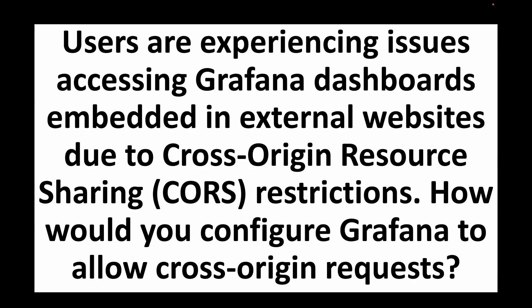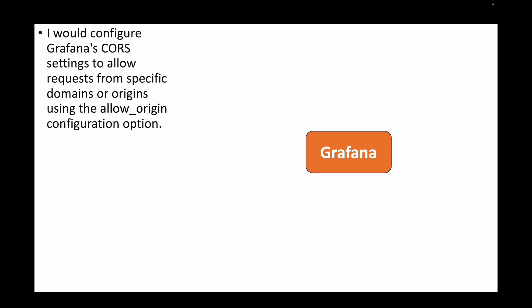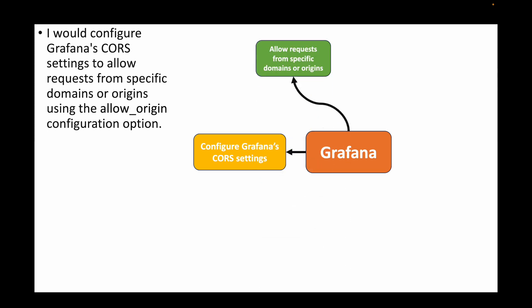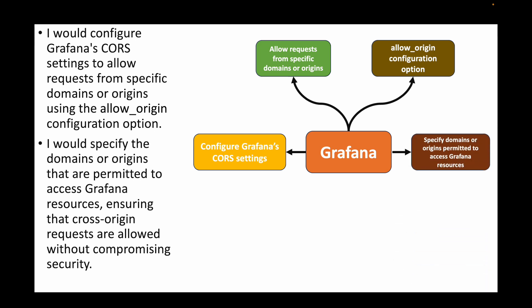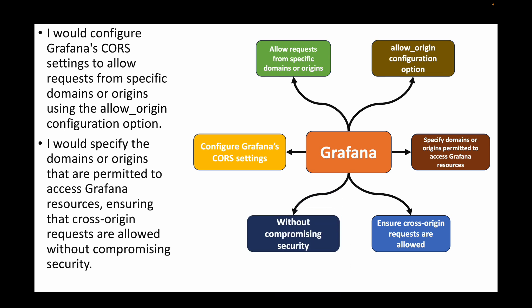The next question: users are experiencing issues accessing Grafana dashboards embedded in external websites due to cross-origin resource sharing (CORS) restrictions — how would you configure Grafana to allow cross-origin requests? We can configure Grafana's CORS settings within Grafana settings to allow requests from specific domains or origins using the allow_origin configuration options. We can specify the permitted domains or origins to ensure cross-origin requests are allowed without compromising security.